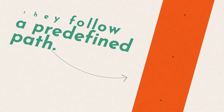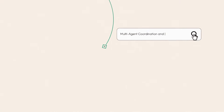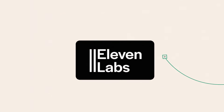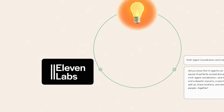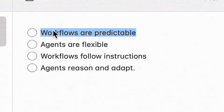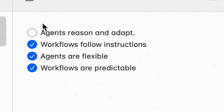Workflows, on the other hand, are static. They follow a predefined path. You give them a task and they execute it step by step without deviation. For example, a YouTube scriptwriter clone: it gets a topic, searches the web, writes a script based on your guidelines, uses external APIs like ElevenLabs for voiceovers, and follows the same path every single time. As Anthropic explains it best: workflows are predictable and agents are flexible. Workflows follow instructions and agents reason and adapt.